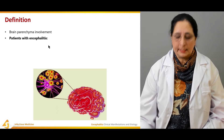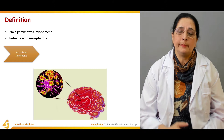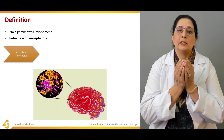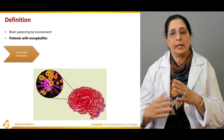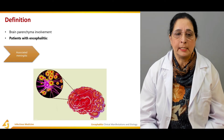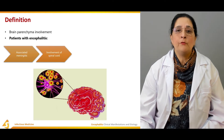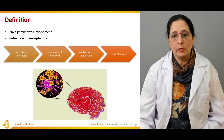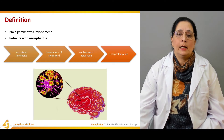Patients with encephalitis usually have associated meningitis. Meninges are the coverings — the layers of the brain and spinal cord. So when the brain parenchyma is affected, the meninges are sometimes affected also. There is also involvement of the spinal cord and involvement of nerve roots, giving encephalomyelitis.